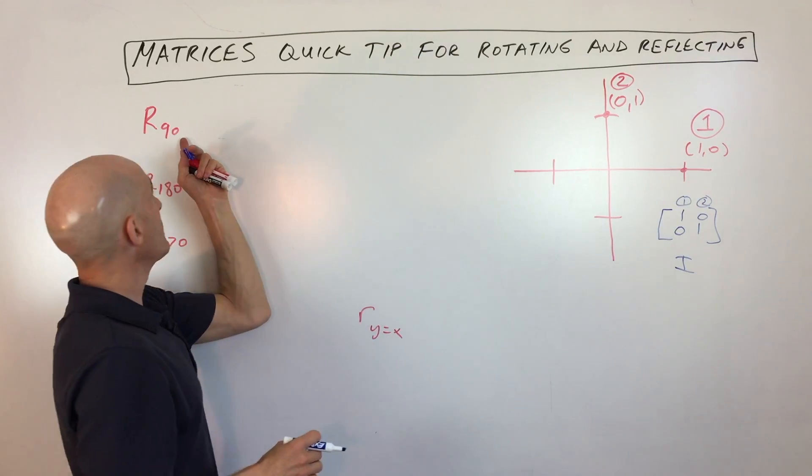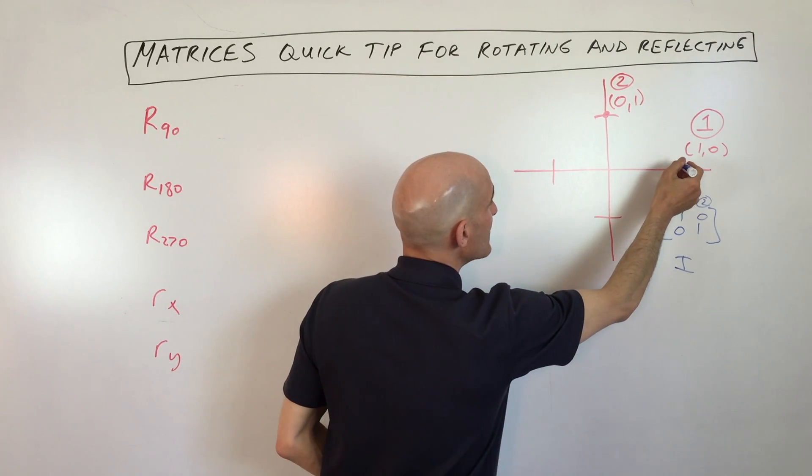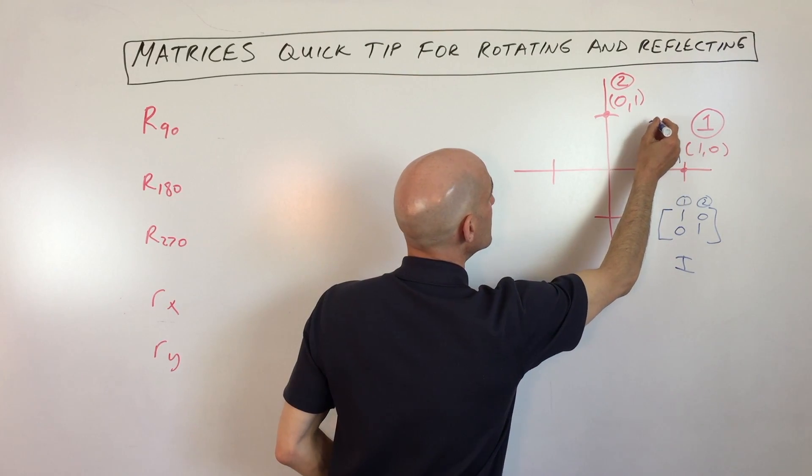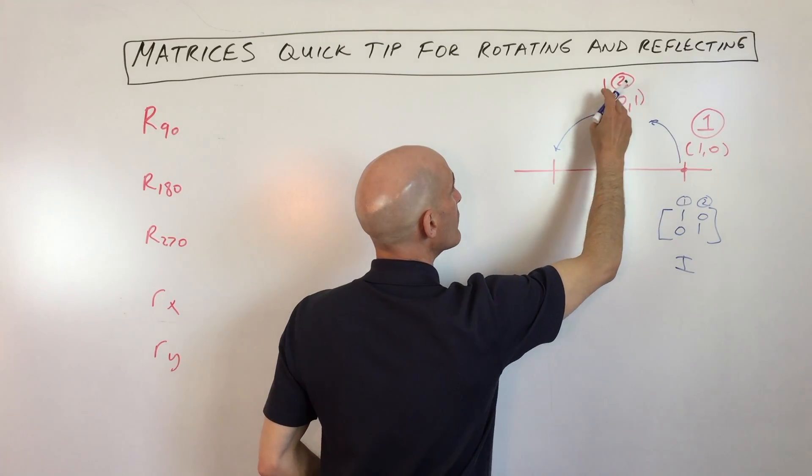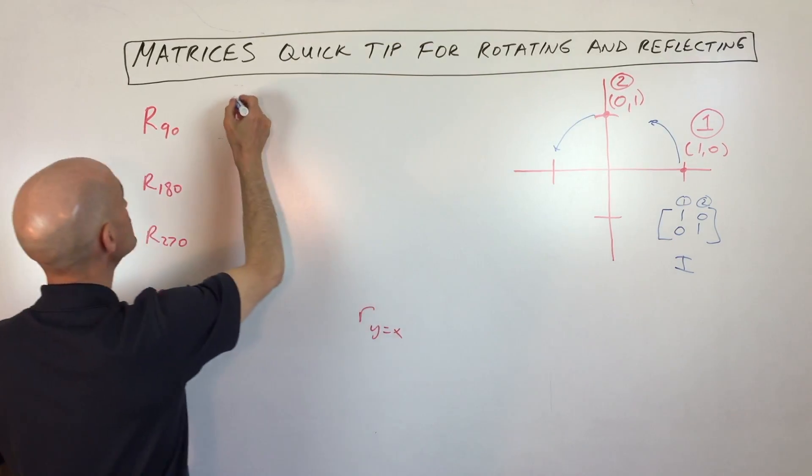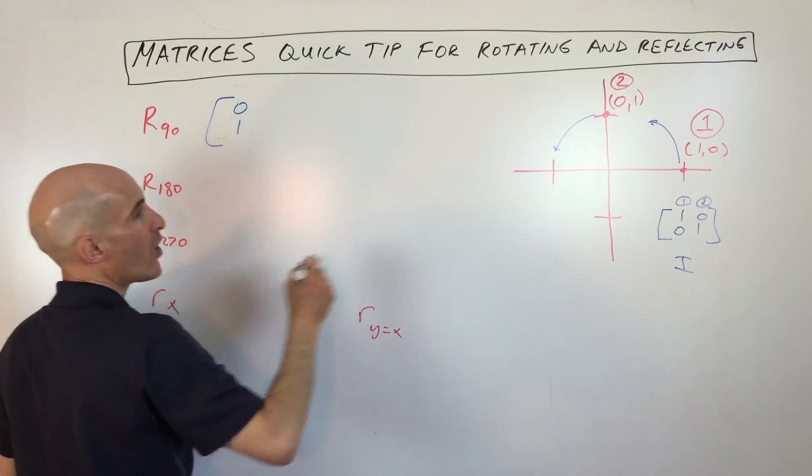All you do is pay attention to these two points. If we want to remember the matrix that rotates 90 degrees, we look at what happens to point one and two when we rotate 90. So if we rotate 90, look at what happens. Point one, zero moves to zero, one. So what I'm going to do is I'm going to replace point one here with its new coordinates, zero, one.